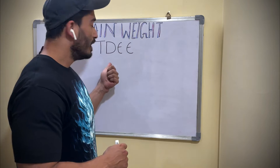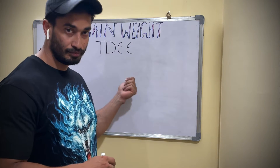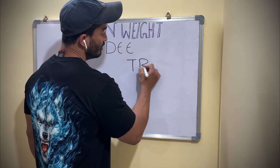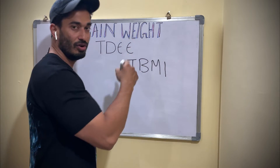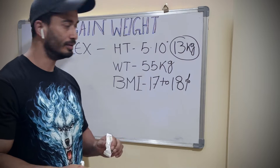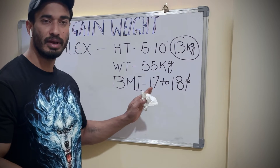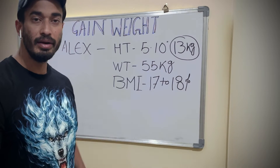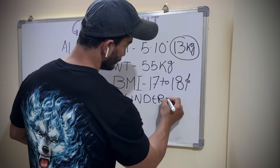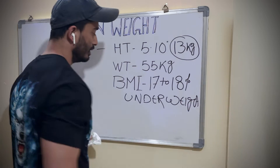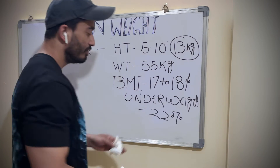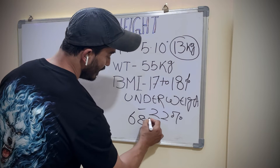I have explained the TDEE concept in the last video, along with the importance of BMR, BMI, and the target BMI. To achieve this goal, let's take an example of Alex. Alex's height is 5'10" and his weight is 55 kg, with a BMI of 17 to 18 percent — which falls under the underweight category.